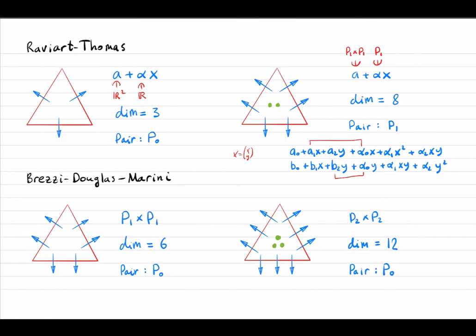The next BDM element uses piecewise quadratic vector fields with 12 degrees of freedom. On each edge the normal component is a quadratic polynomial with three degrees of freedom, giving nine degrees of freedom over the three edges, with three remaining interior degrees of freedom to reach 12 in total. The pair for this element is p1.